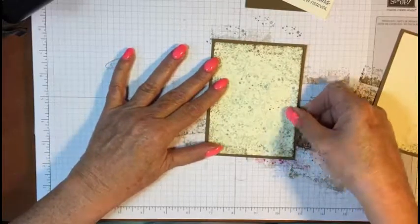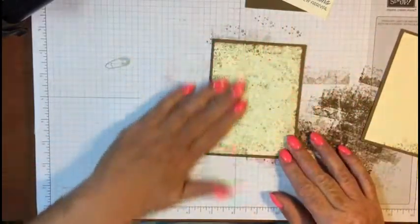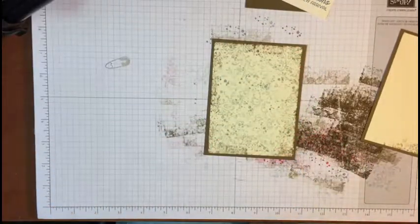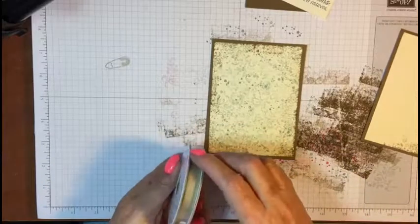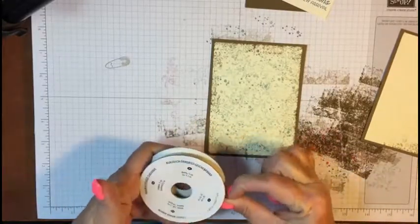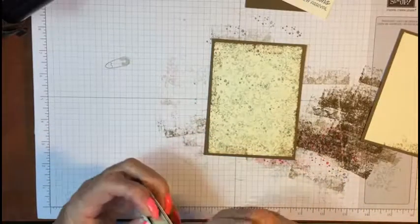And what I'm gonna do is I'm gonna get some ribbon. Now this is actually the crumb cake ribbon—this is just a little bit lighter ribbon.